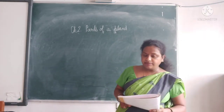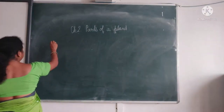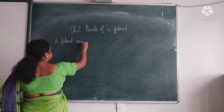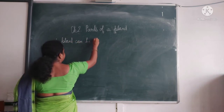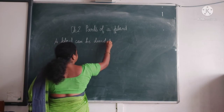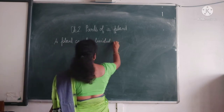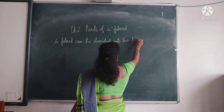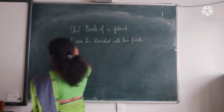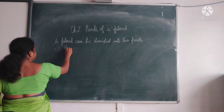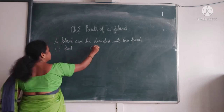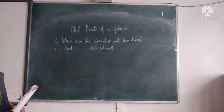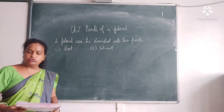But what are the main two parts? A plant can be divided into two parts. One is the root and the other one is the shoot.